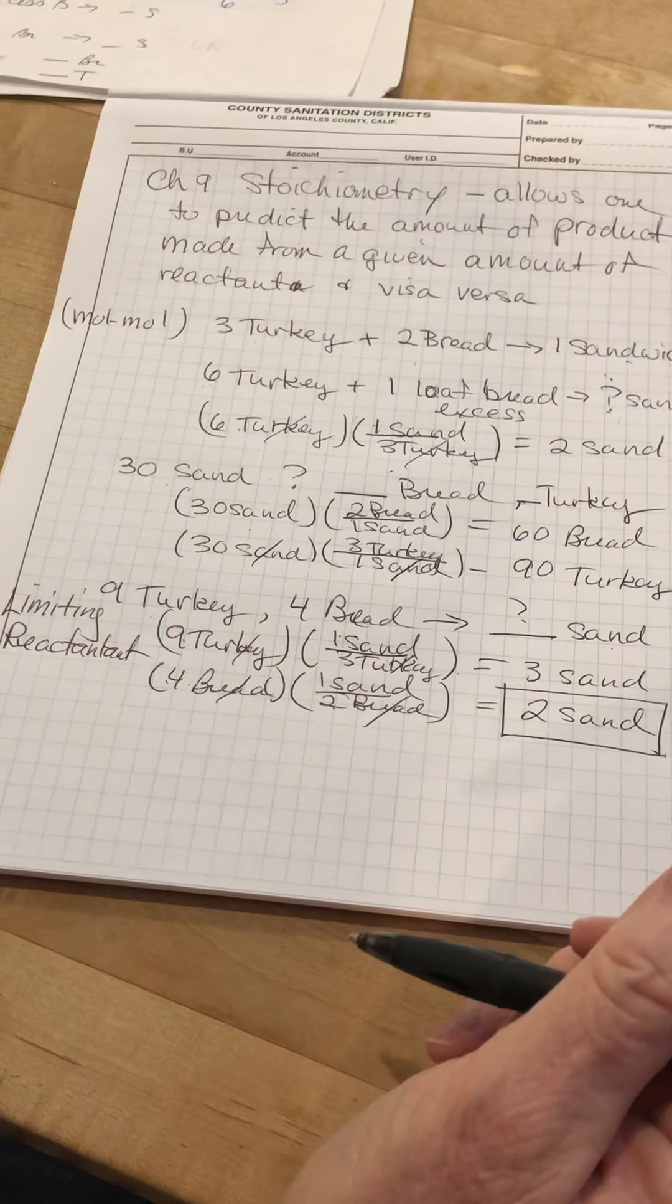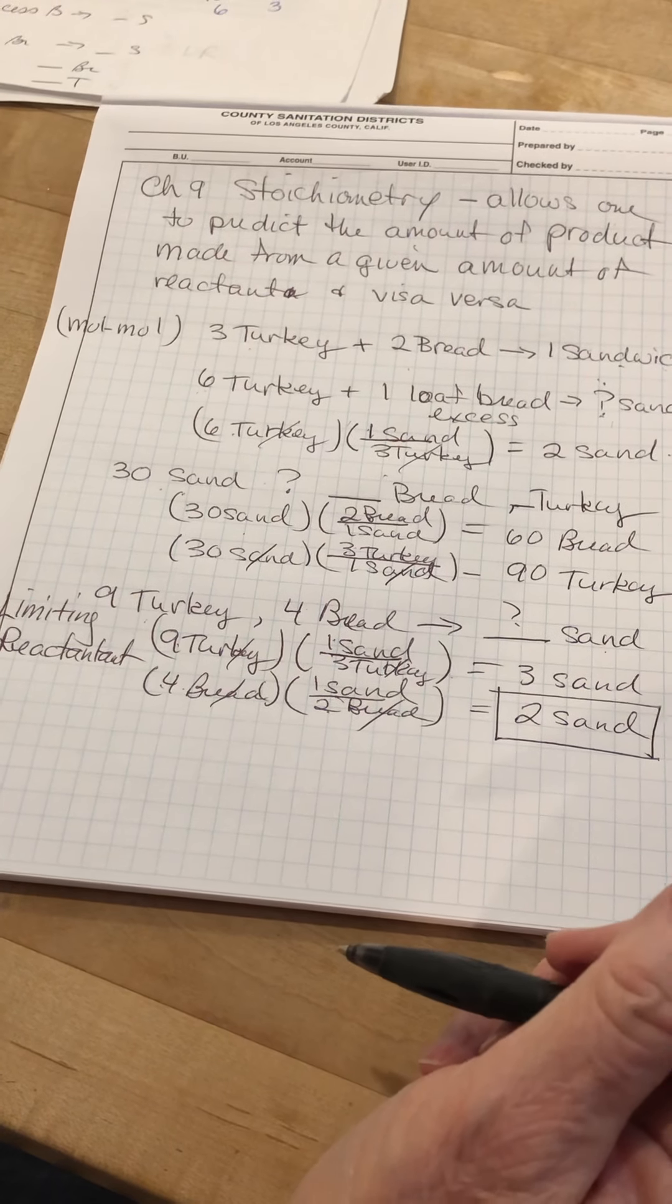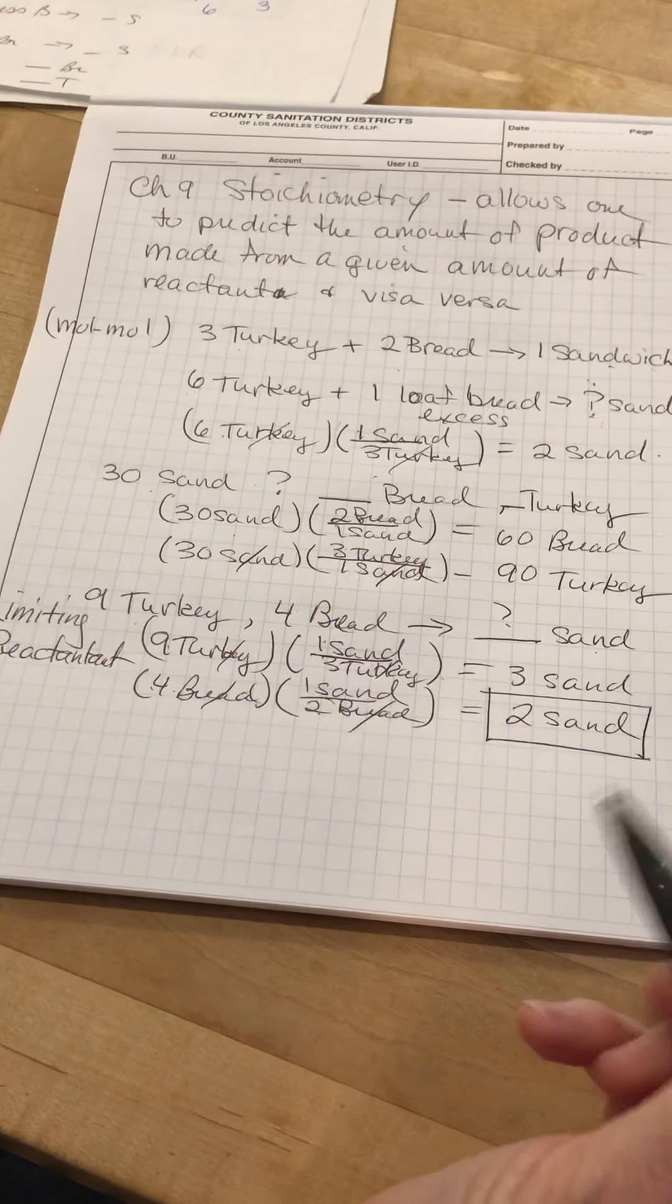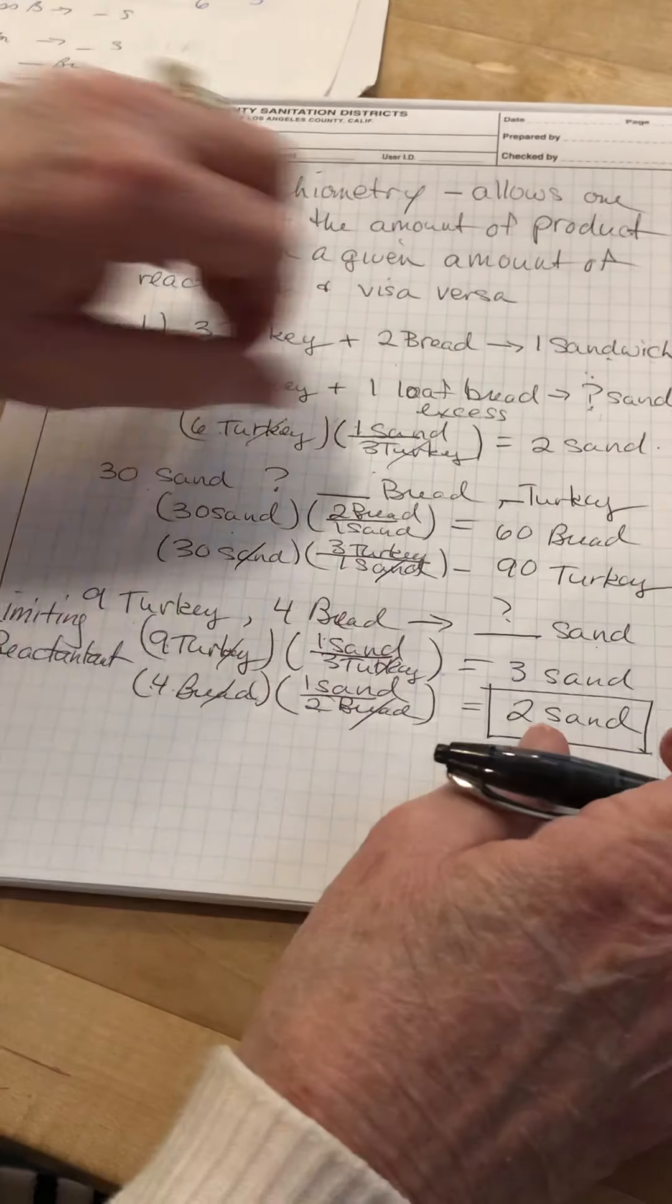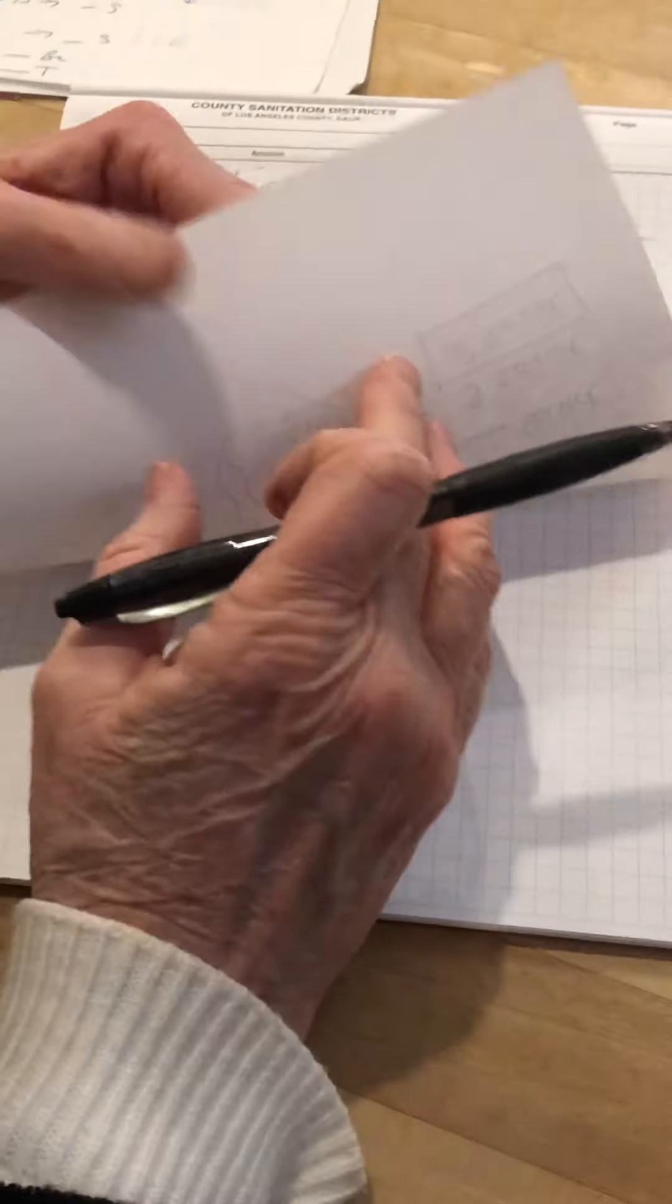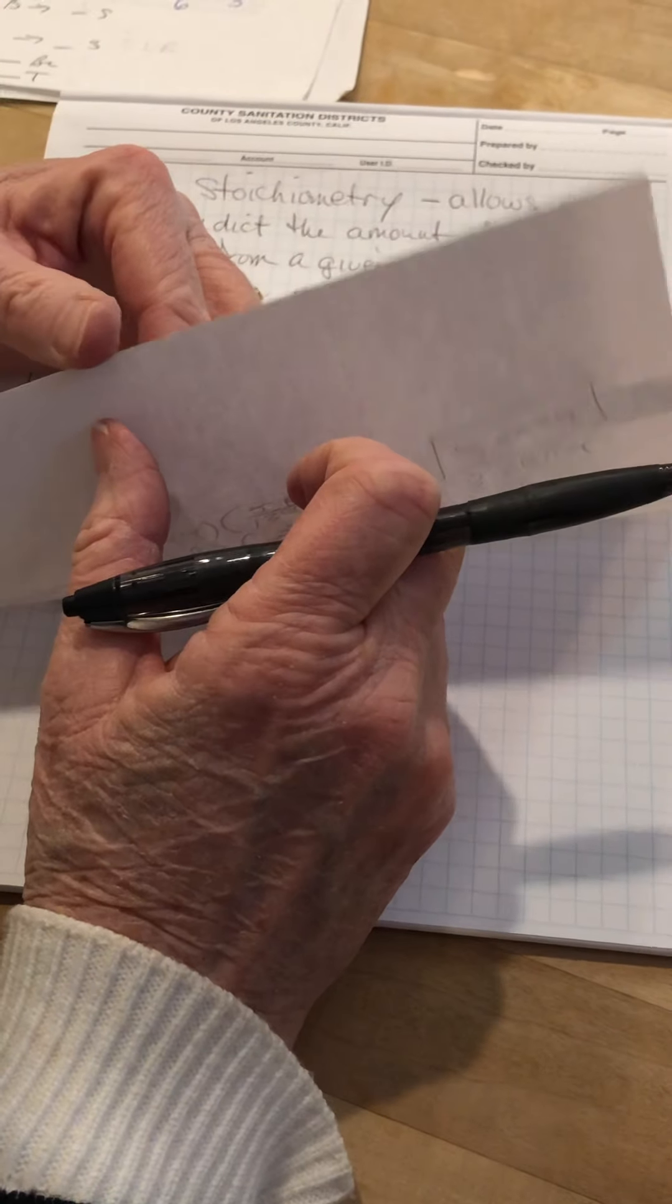So with turkey sandwiches, we have just gone through three quarters of the chapter. Okay, the last one is munch. Is that it? Yeah. Here we go.